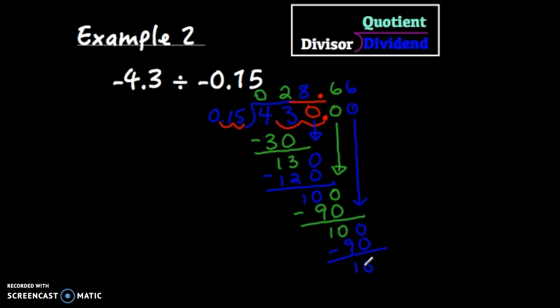So it looks like this 28 is my whole number. And then the 6 repeats after the decimal point. So I'm going to write a bar over that 28.6 repeating. And this will be a positive answer. Because a negative divided by a negative is positive.